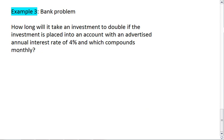Right away we know this is a bank problem. We have an advertised annual and we have compounding. So we're going to use the equation A equals P times 1 plus R over N all to the N times T.